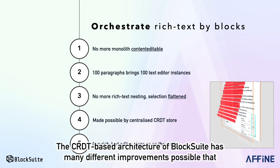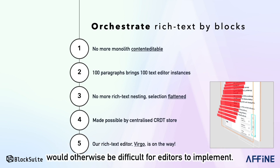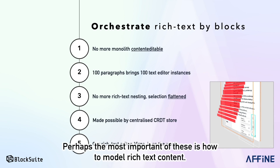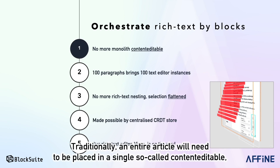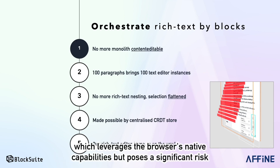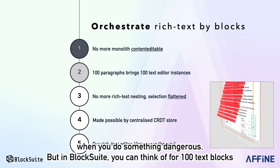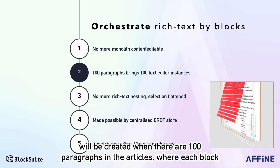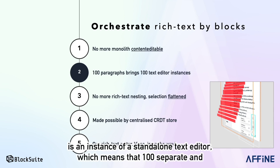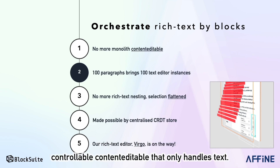The CRDT-based architecture of BlockSuite has many different improvements possible that will otherwise be difficult for editors to implement. Perhaps the most important of these is how to model rich text content. Traditionally, an entire editor will need to be placed in a single so-called content-editable, which leverages the browser's native capabilities, but poses a significant risk because you can't control how the browser will modify the DOM in its container when you do something unexpected. But in BlockSuite, for 100 text blocks, they will be created when there are 100 paragraphs in the article, where each block is an instance of a stand-alone text editor.